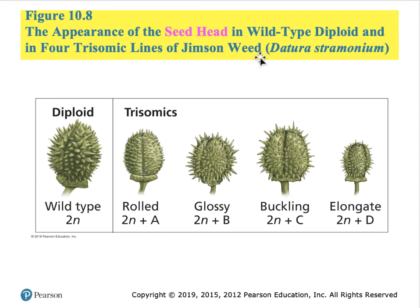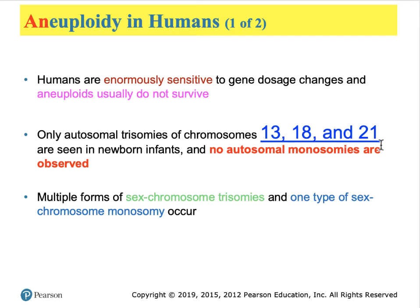This doesn't seem to affect plants as much as animals. In plants that are affected—such as Jimson weeds—the wild type has the right number of chromosomes, but having an extra chromosome of type A, type B, etc., each has an impact on the phenotype of the seed head. Different genes reside on different chromosomes and are involved with different biochemical processes, so some chromosomes may contain genes that impact biochemistry less than others, meaning their duplication affects the organism less.